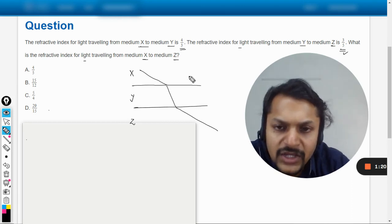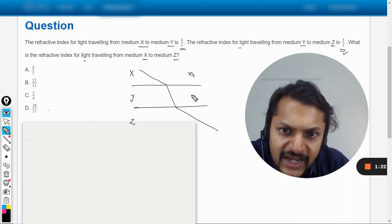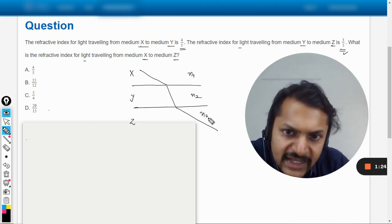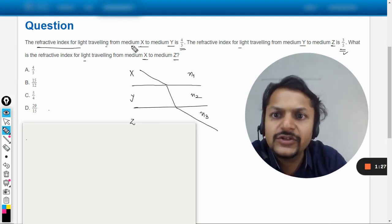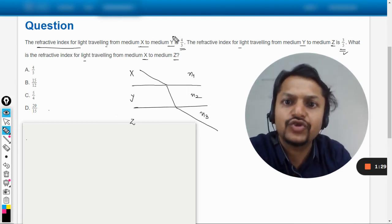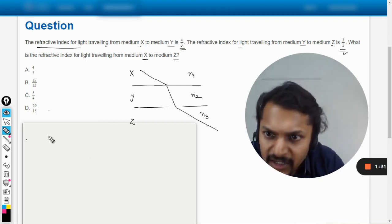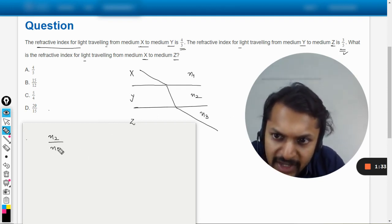But let us see what is happening. Let us say that this is n1, this is n2, and this is n3. So the refractive index of light when it travels from X to Y will be n2 divided by n1, and it is given as 4 by 3.